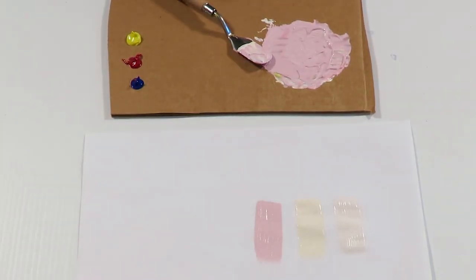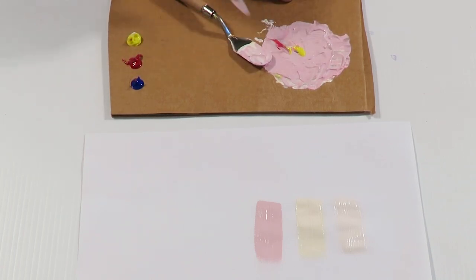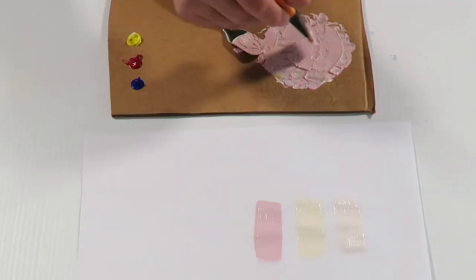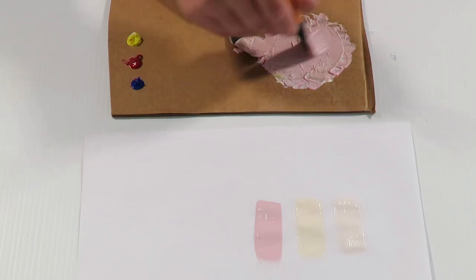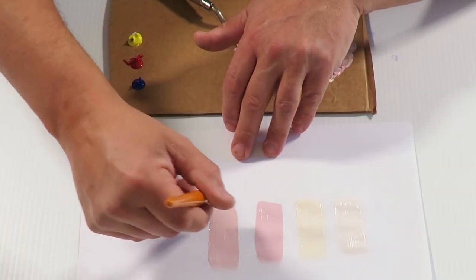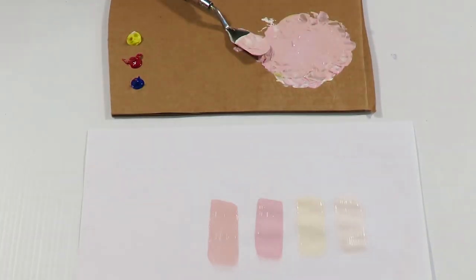And now we're going to add a bit more yellow. We're going to make this skin tone color a little bit darker. Like a sunburnt sort of color. Paint this on the paper. It's a little bit darker.